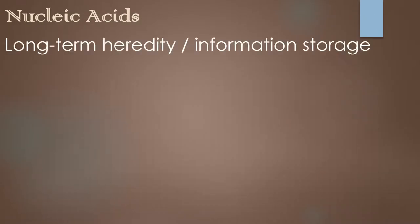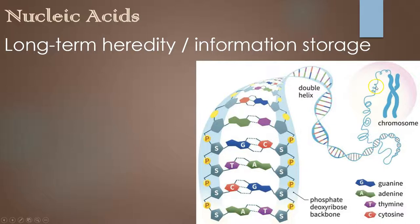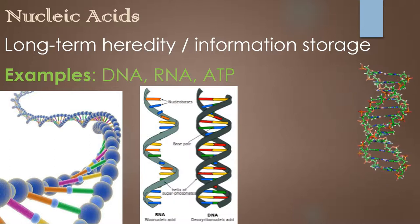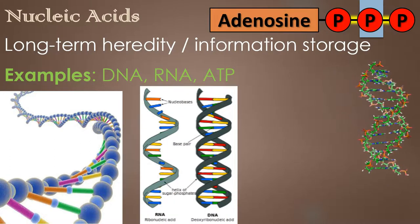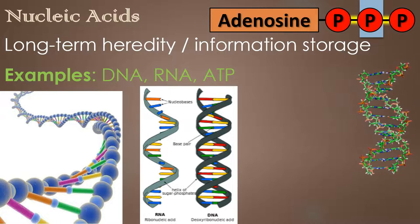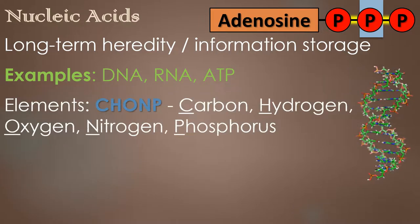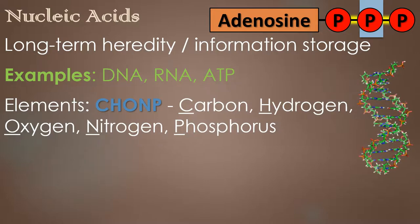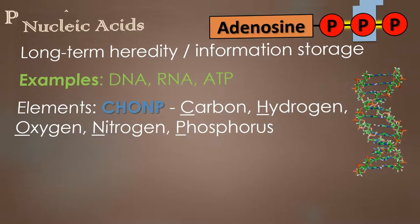Third, nucleic acids. They store things too, but not energy — they store information like heredity. What makes you look like your parents, or a puppy look like its parents — that information passed down generation to generation is stored in nucleic acids, in chromosomes. DNA and RNA are nucleic acids. We'll also talk about ATP, which is a temporary energy storage, but for the most part nucleic acids are information storage. The elements in nucleic acids are the most complicated — they have CHO like carbs and lipids, but also nitrogen and phosphorus added into the mix.